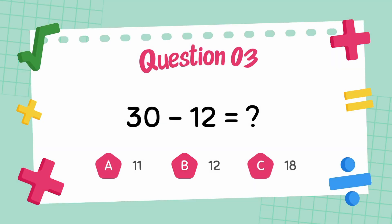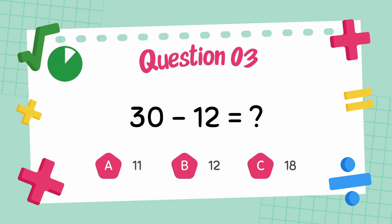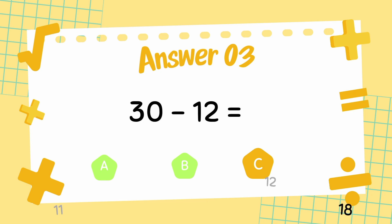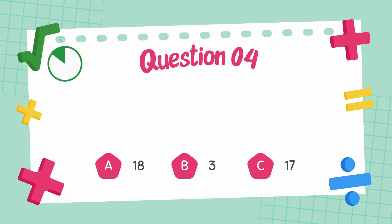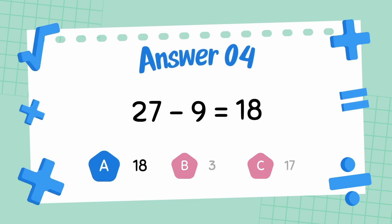What is 30 minus 12? The answer is 18. What is 27 minus 9? The answer is 18.